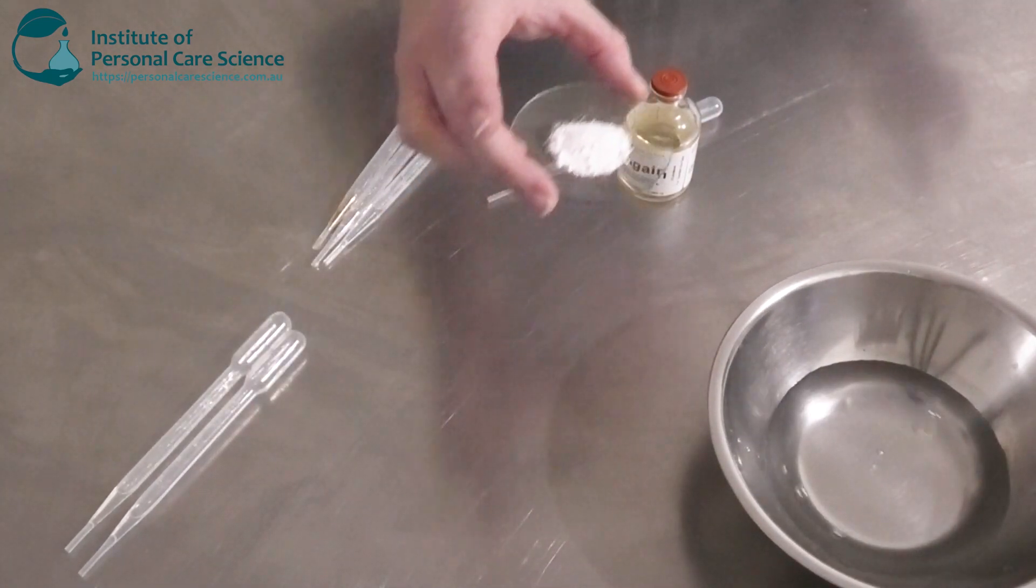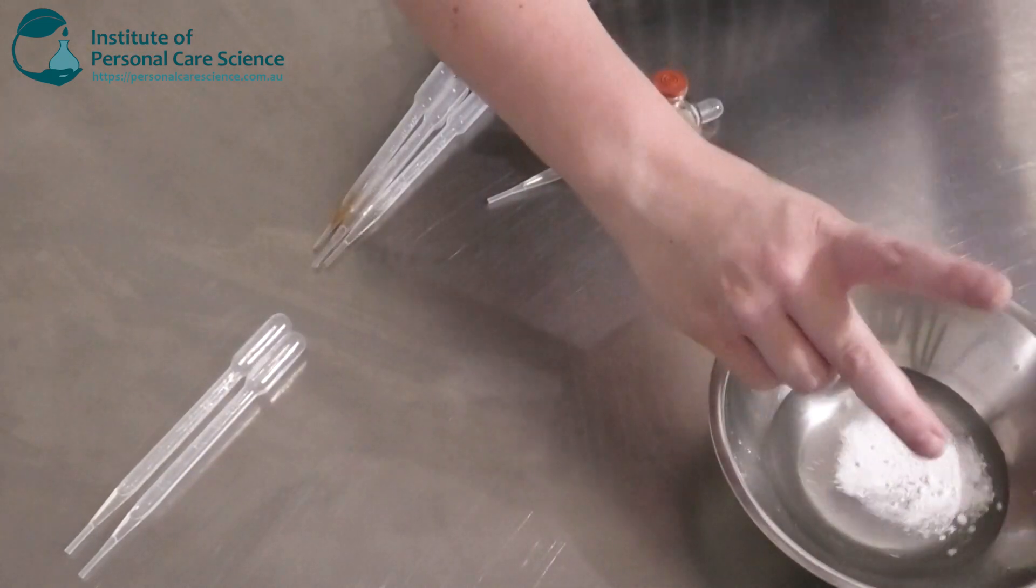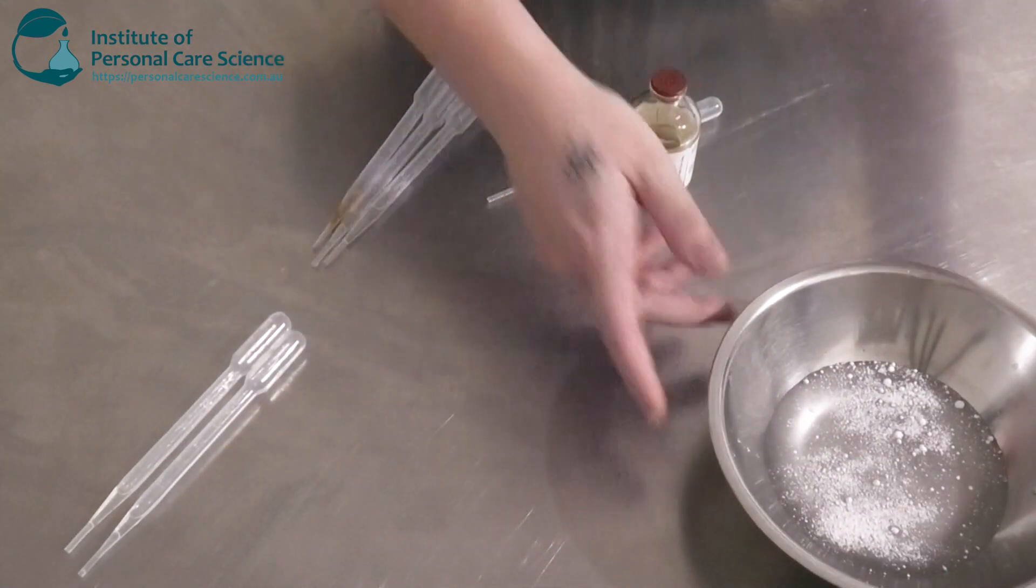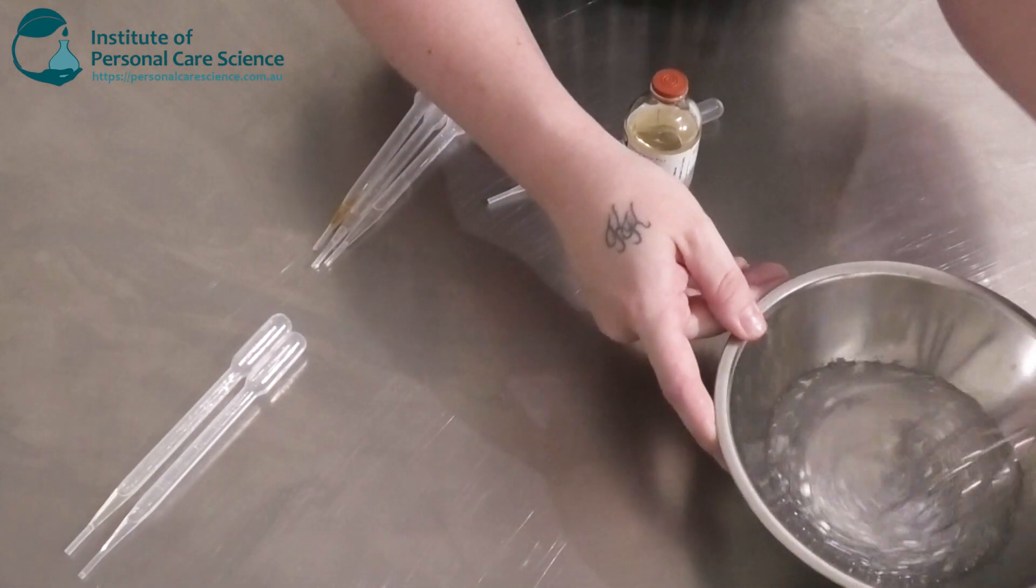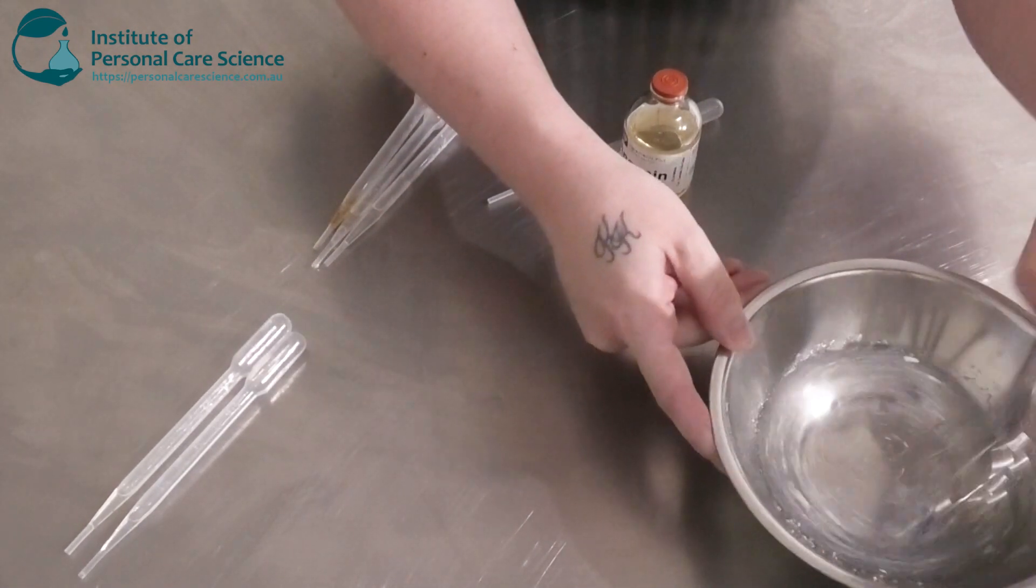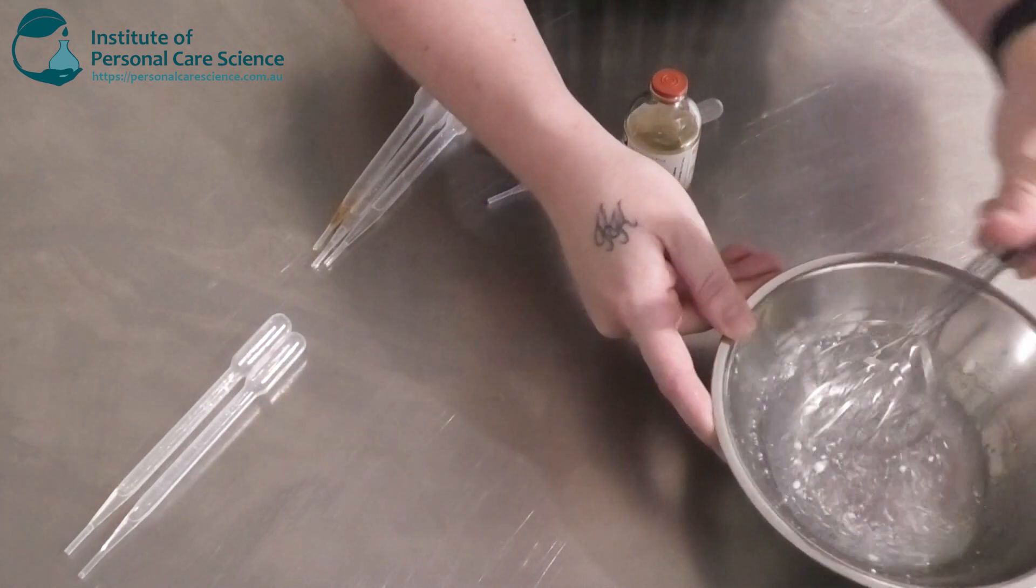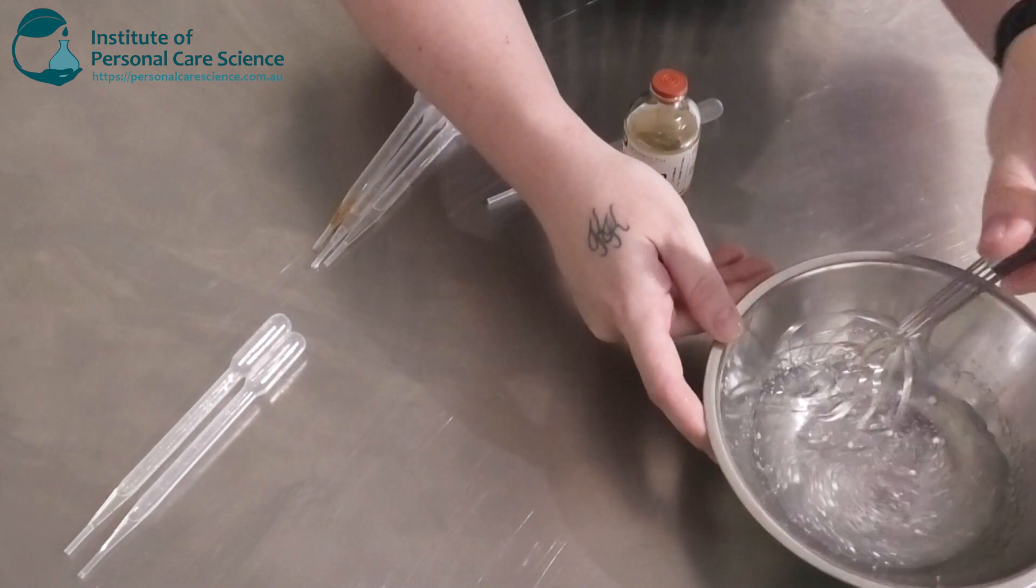And to this I'm going to add some Cepi Max Zen. This is going to create a nice stable serum. Now this won't hydrate straight away so I am going to stir it to disperse and wet the polymer and then I'm going to cover it and leave it and come back to it.